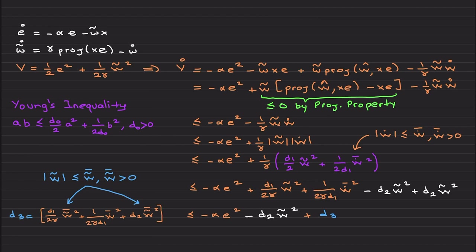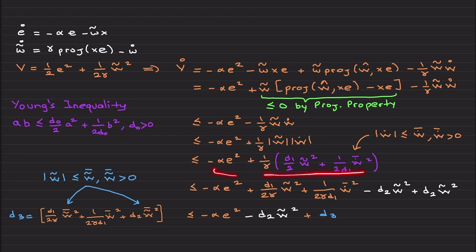You can recover asymptotic error convergence with the projection operator when ẇ = 0. If w is time-varying but eventually becomes constant, you recover asymptotic stability — which is better than mere boundedness. Now let's assume ẇ is not zero but is bounded by some constant. I apply Young's inequality to this term: a·b ≤ a²/(2d₀) + b²·d₀/2 for some arbitrary positive constant d₀.